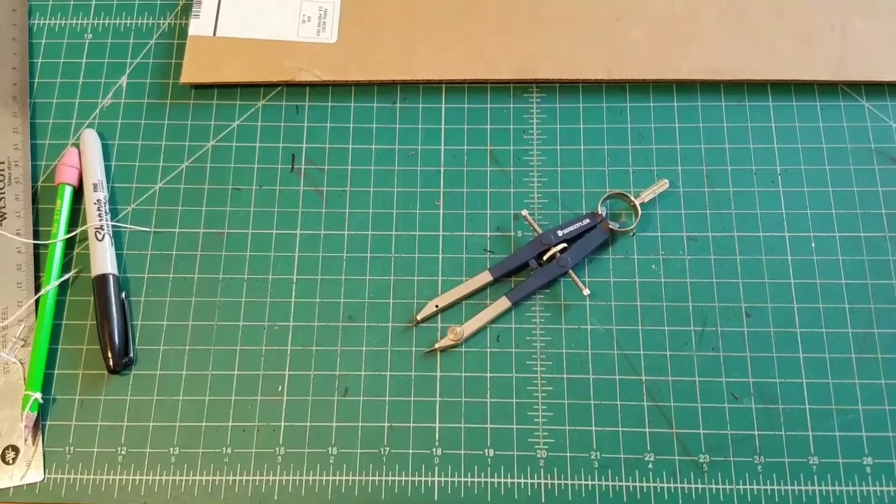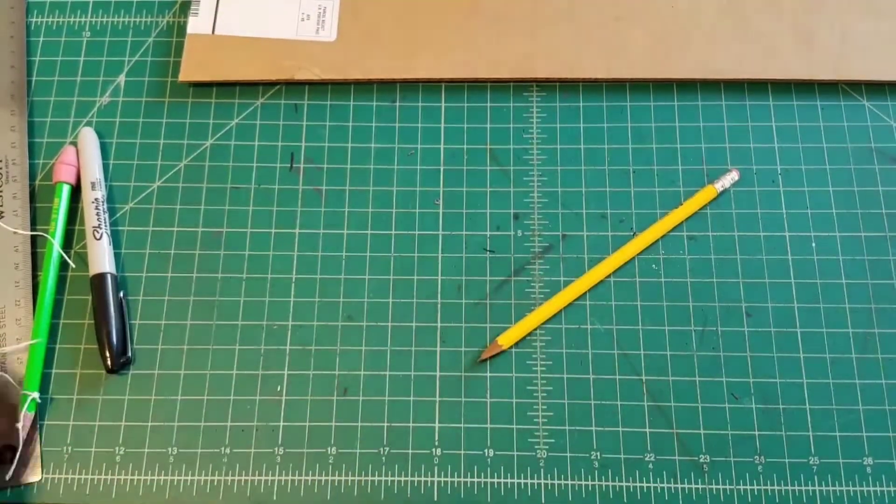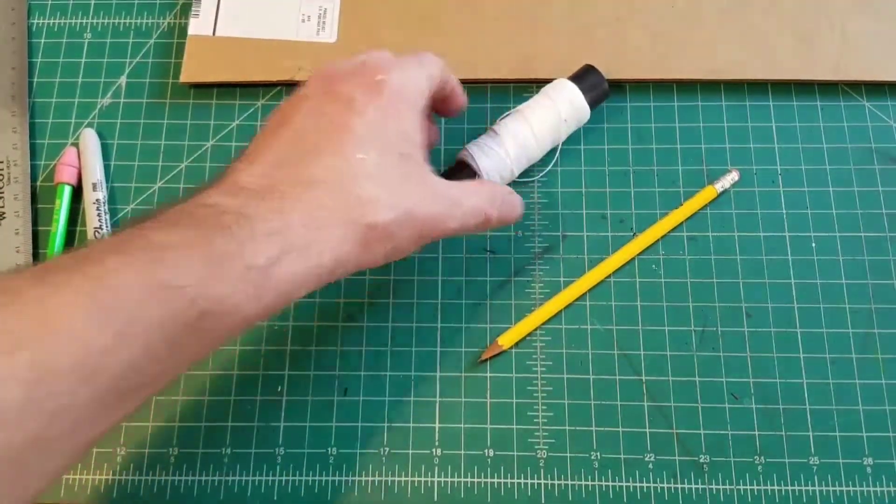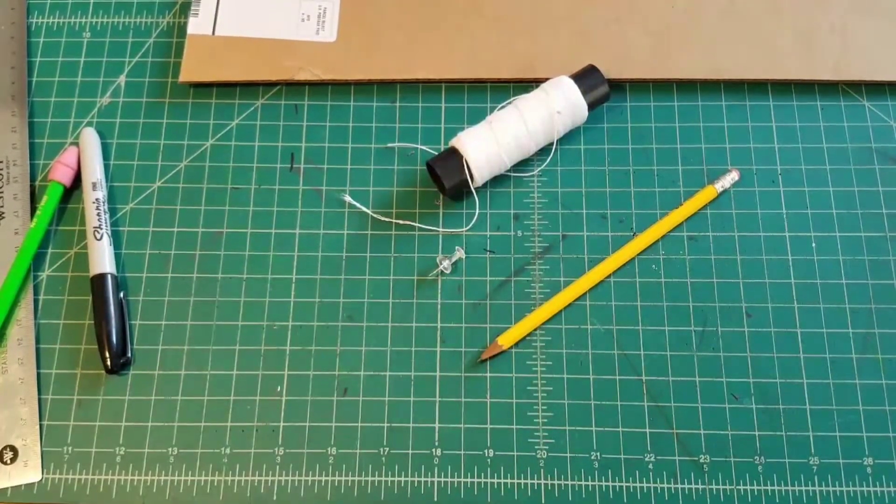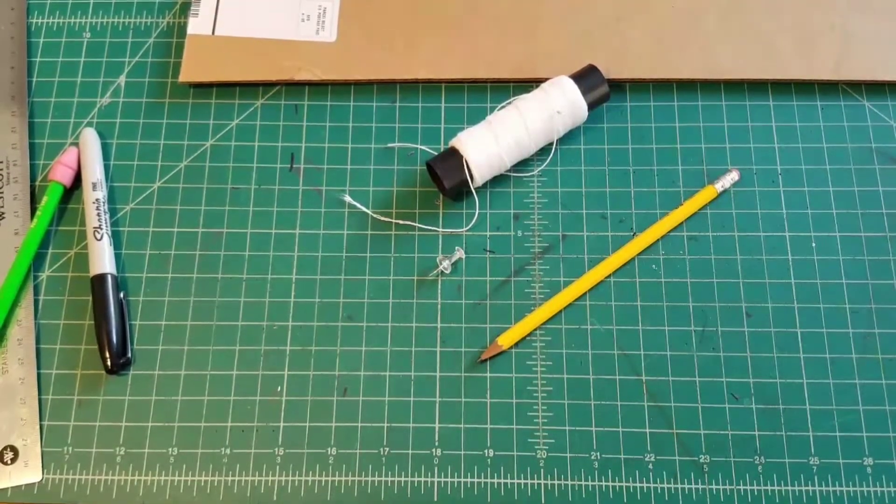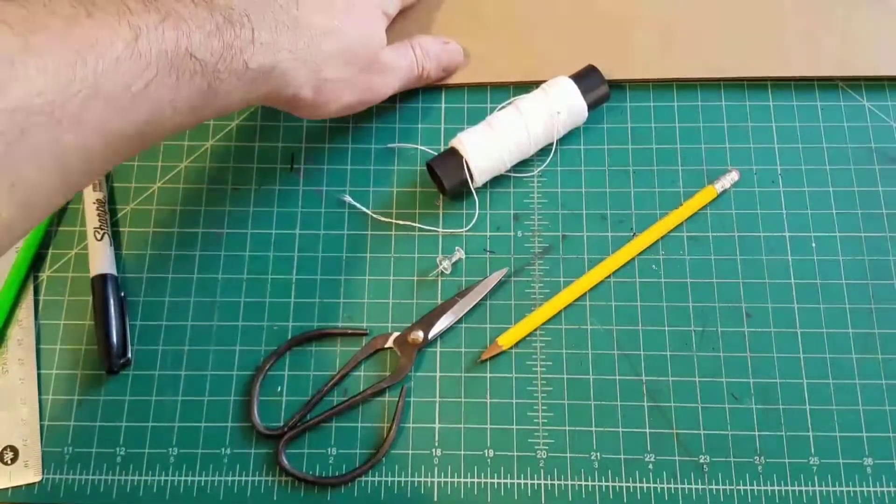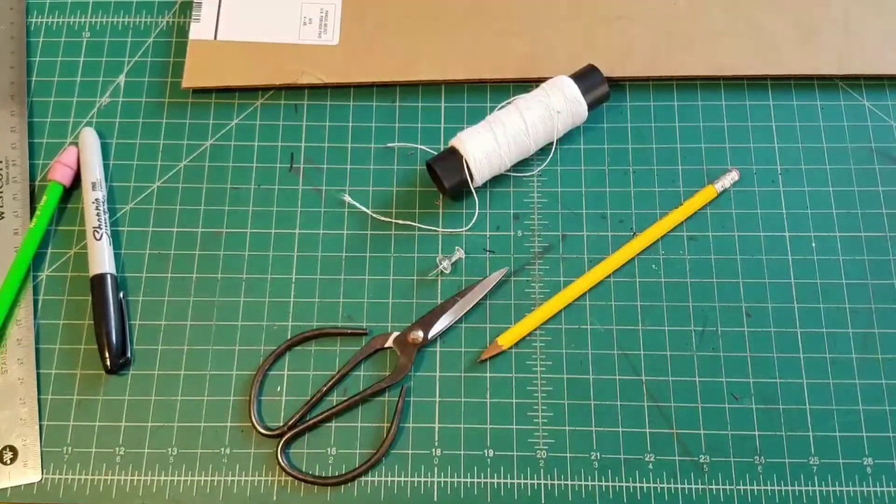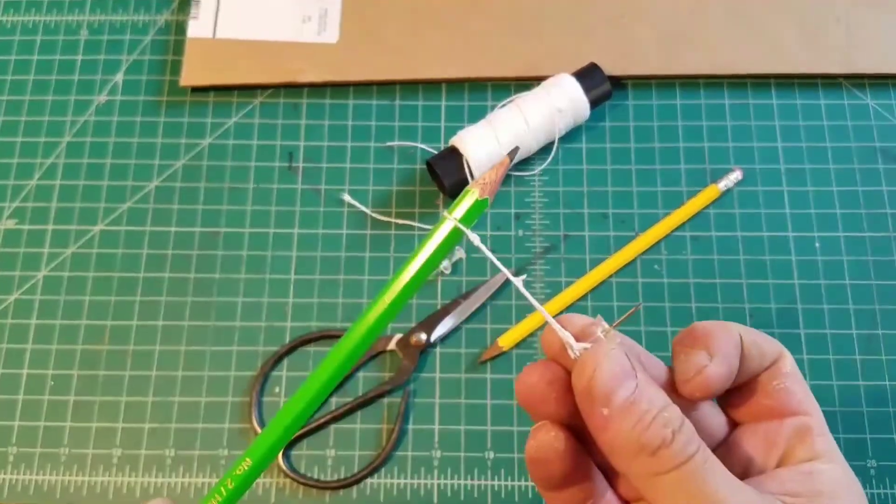The first step is going to be making a compass. I'm not going to assume you have a compass, and I'm going to show you how to make one. You're going to need a pencil, some string, and a thumbtack, the one that has a bit of a handle on it. Also helpful will be a pair of scissors and some cardboard, because you probably don't want to put holes in your coffee table.